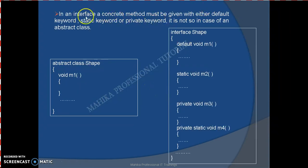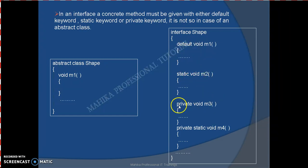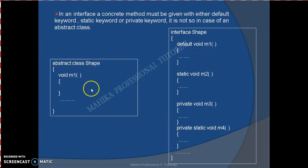The next difference is that in an interface, a concrete method — which is permitted since Java 8 onwards — must be given with either the default, static, or private keyword. Whereas it is not so in case of an abstract class. In an abstract class we can have both concrete and abstract methods, and when writing concrete methods it is not mandatory to add a modifier like default or static. But in case of an interface, whenever we write a concrete method it should be given with either the default keyword or the static keyword. From Java 9 onwards, private and private static methods are also permitted in an interface. So a concrete method in an interface can be default, static, private, or private static.